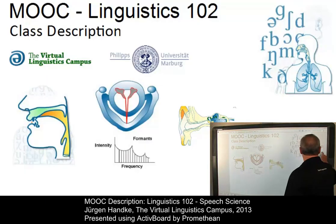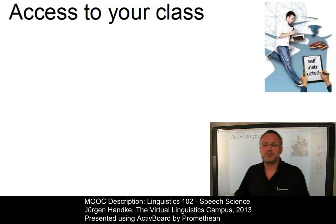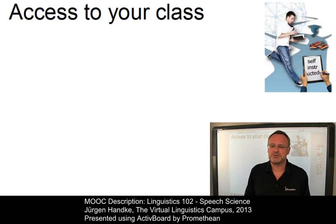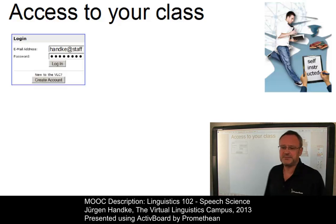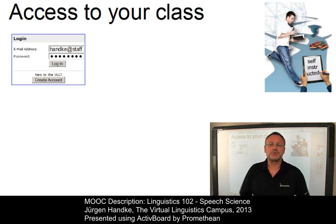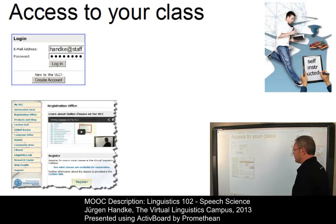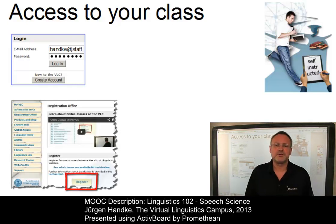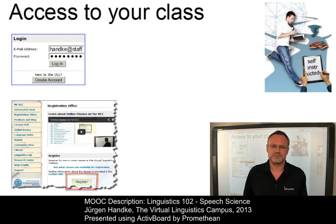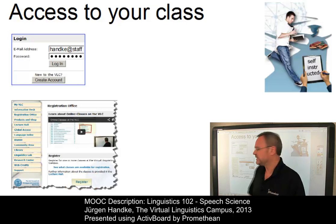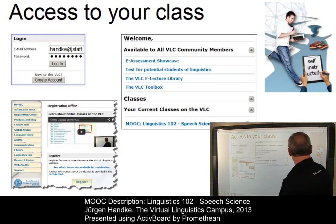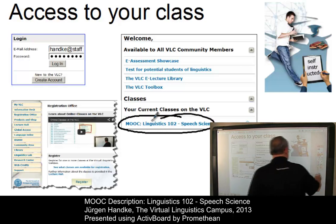And this is how to register. First, you have to create your free account on the Virtual Linguistics Campus. Then you should log in with your personal data, and you should visit the registration office where you can register for the Linguistics 102 class with a few mouse clicks. And once you have registered, you can log in and you will find on your personalized start site the name of the MOOC you have registered for.